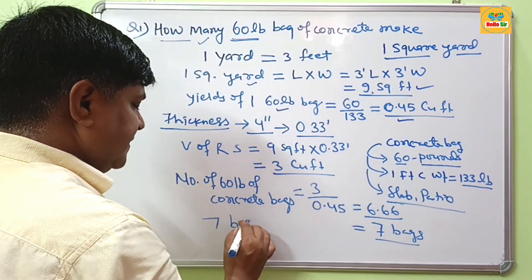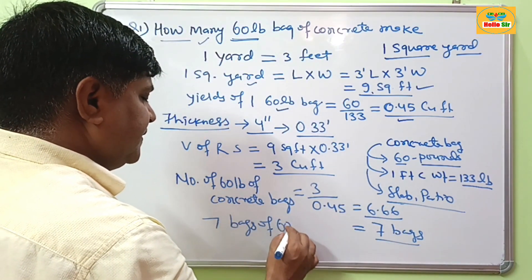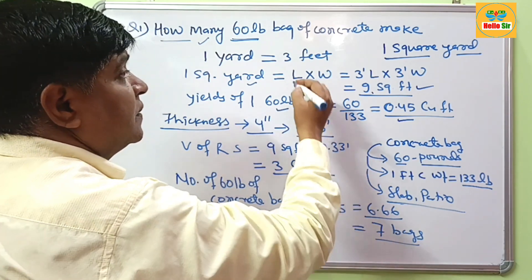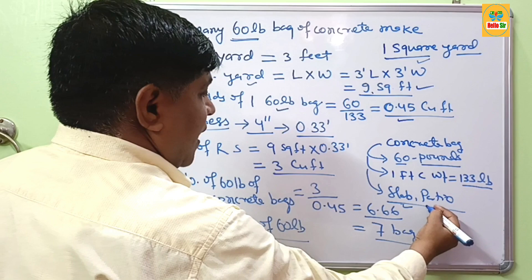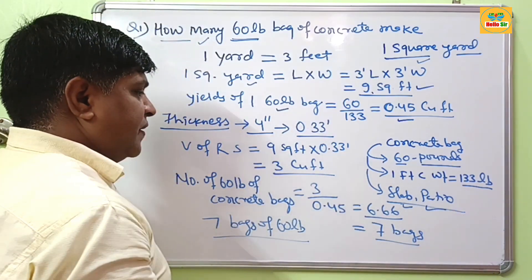It means you may need 7 bags of 60-pound concrete to make 1 square yard of your slab or either base. Thank you.